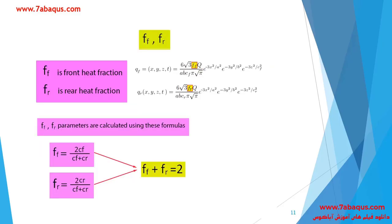In the next slide, the parameters FF and FR have been distinguished. FF is the front heat fraction and FR is the rear heat fraction. You can observe these two parameters in the Goldak double ellipsoid formulae. FF and FR are calculated using two specific formulae, which you can observe in this slide.